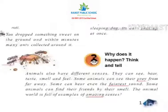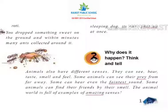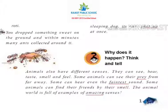Some animals can see their prey from far away. Some can hear even the finest sound. Animals like earthworms can feel the vibrations of the earth before we do — they feel it first, and then we feel it. Some animals can find their friends by their smell. The animal world is full of examples of amazing senses.